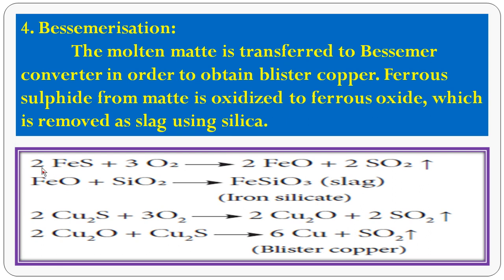The first reaction in Bessemerization: FeS + 3O₂ → FeO (ferrous oxide) + SO₂ gas. This ferrous oxide reacts with silica (SiO₂) to form iron silicate (FeSiO₃), which is the slag. The slag is removed first. Then copper sulphide reacts with oxygen to form copper(II) oxide plus sulphur dioxide gas.